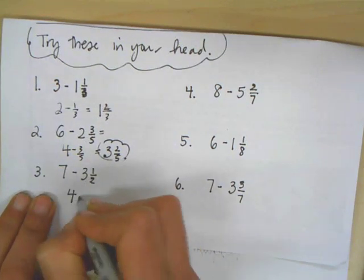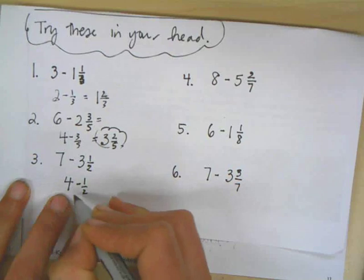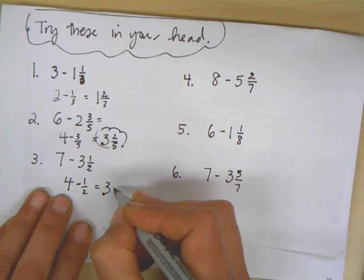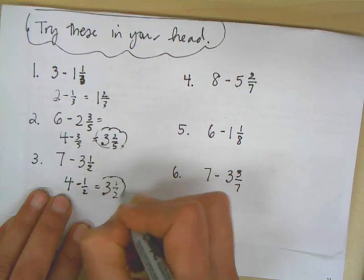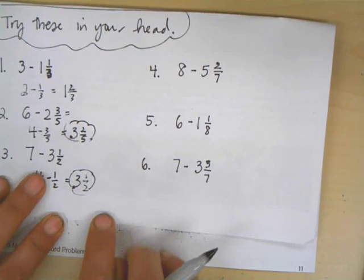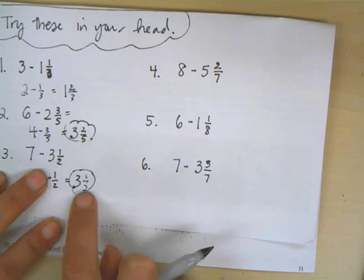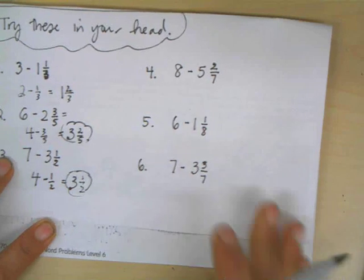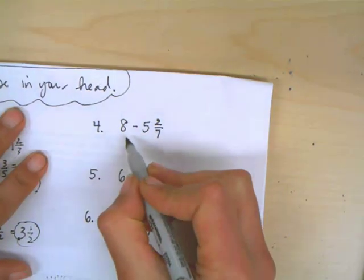Whole numbers first. 7 minus 3 is 4. Then take away the half, so I know I'm less than 4, so I have 3. And I took away a half from that, so I have a half left. And once again, you can also add back. So a half plus 3 and 1 half gets me back to my original 4. So one of those ways may work better for you than the other.